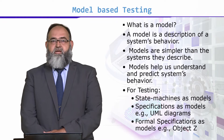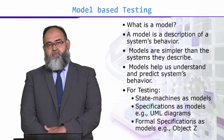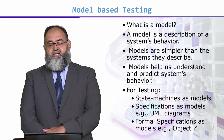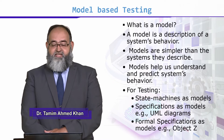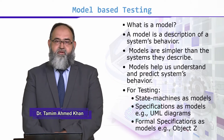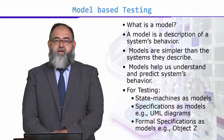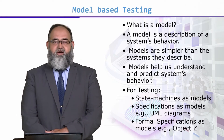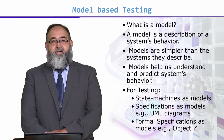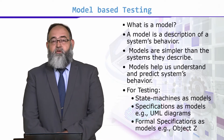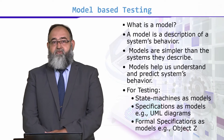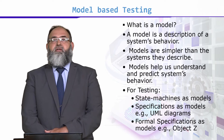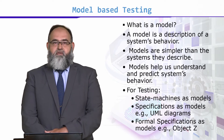The first question that comes up is: what is a model? A model is a description of a system's behavior, and a model is simpler than the system that it describes. For example, if we make a model for traffic lights, traffic lights will be complicated, but the model will represent it more simply. It will describe the behavioral part of the traffic lights.